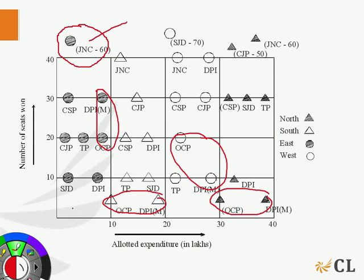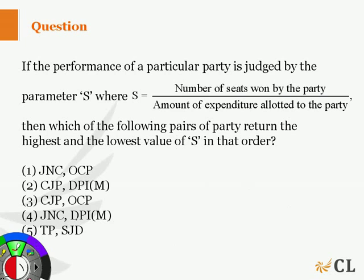So, we can say that the total expenditure allotted to BPIM is more than that of OCP and hence the value of S will be lowest for BPIM. Hence, option 4 is the correct choice.